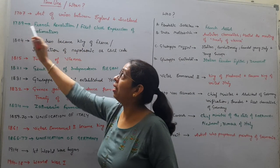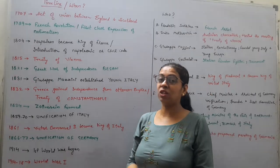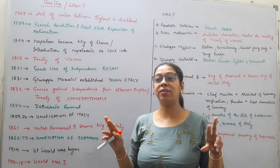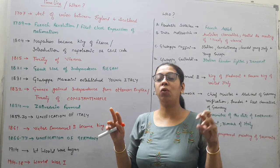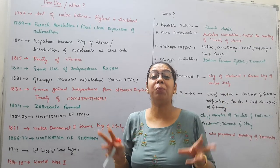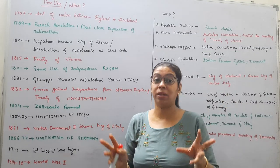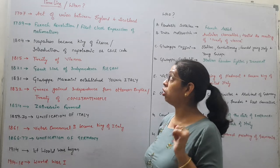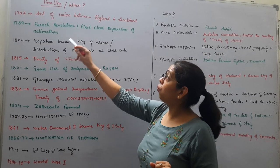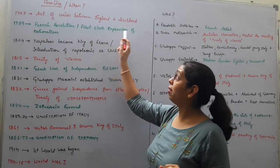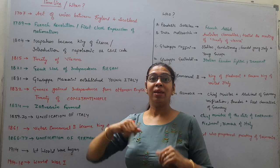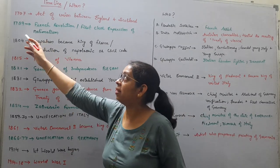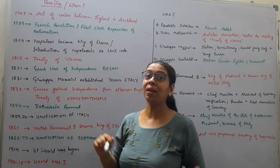Then 1789 — you have studied the French Revolution in 9th class. It was the most famous and the biggest turning point in world history. Sometimes a question can be asked: when was the first clear expression of nationalism seen in world history? The answer is again 1789.